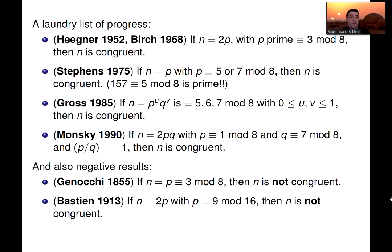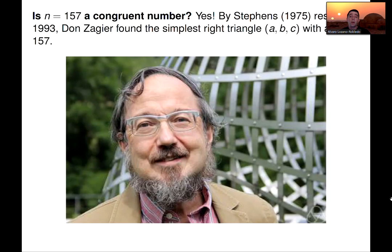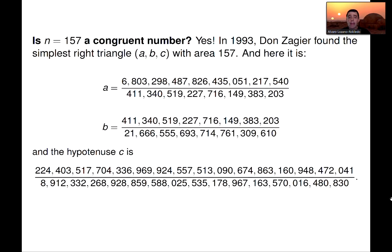There is one, but it turned out to be very hard to find. So is it a congruent number? Yes, yes, by Stevens, but it took until 1993 for Don Zagier, when Don Zagier found the simplest right triangle with area 157. Here's a picture of Zagier, and here it is. So the triangle with sides A, B, C, with A, B, C as in the screen, that is a right triangle with area 157, and that is the simplest such triangle with area 157. And I'm always just amazed of looking at these numbers and that this is the first example of such a triangle. So there it is.